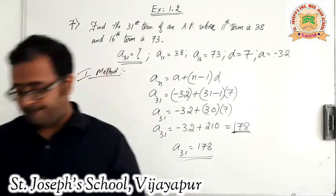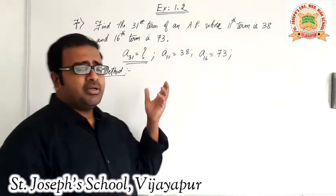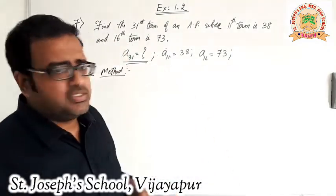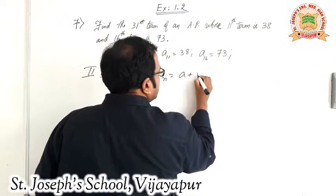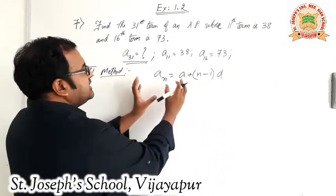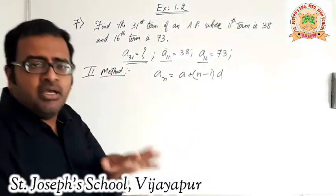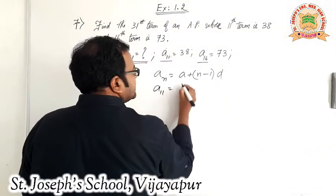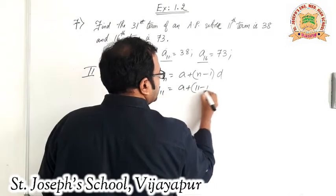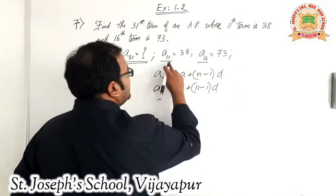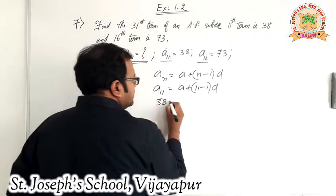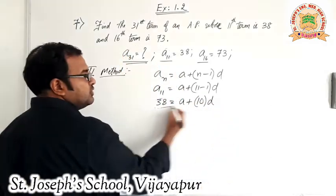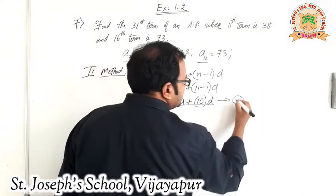Now we will use the second method, which is commonly applicable to all problems — especially if you don't remember the special formula for D. We apply the AN formula: AN equals A plus (N minus 1) into D, for both A11 and A16 separately to get two linear equations. For A11: 38 equals A plus 10D. This is equation 1.